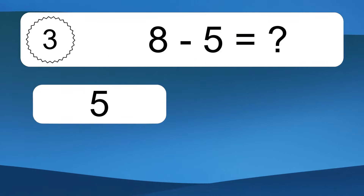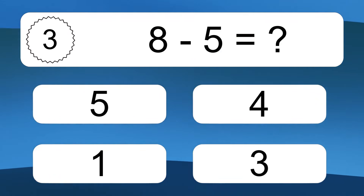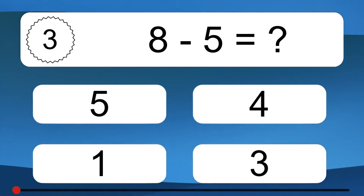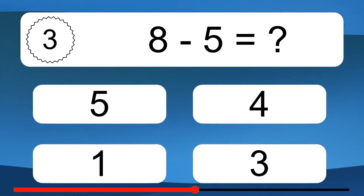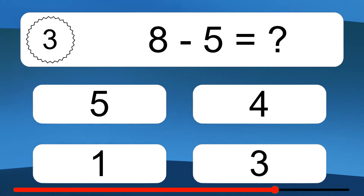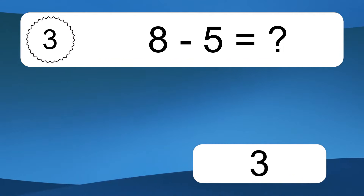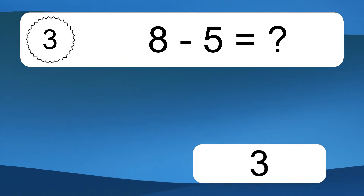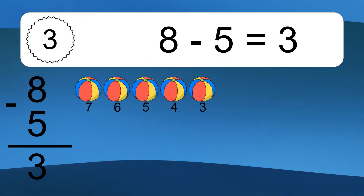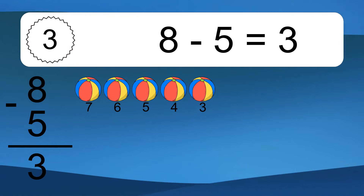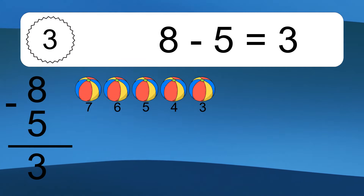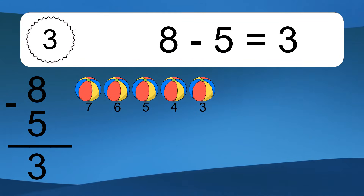8 minus 5 equals what? 8 minus 5 equals 3. Let's count it: 7, 6, 5, 4, 3.